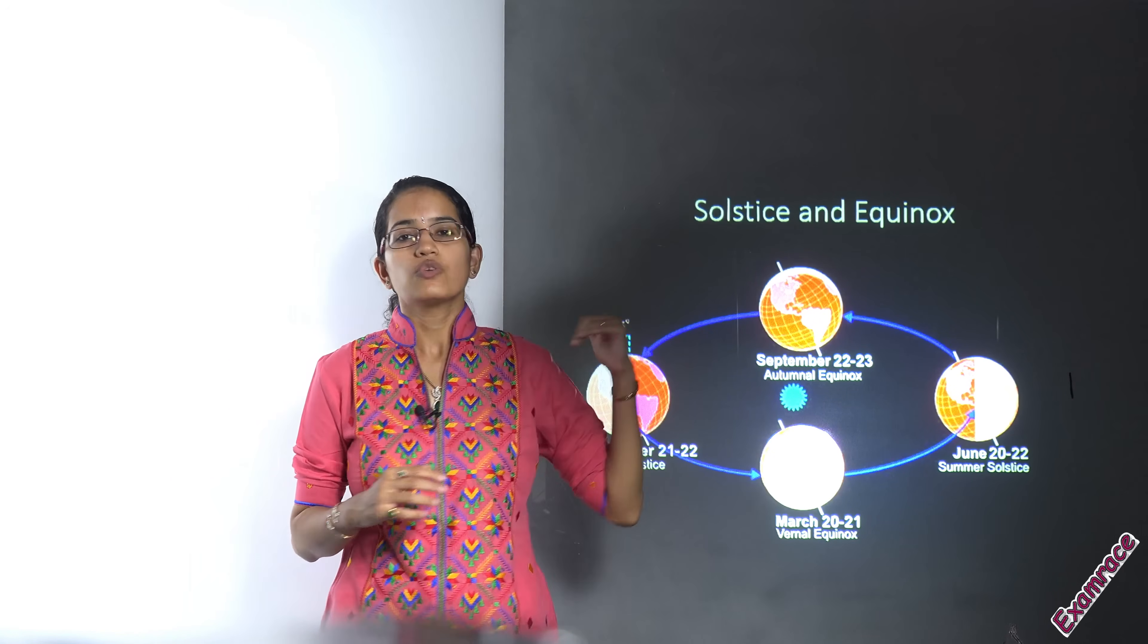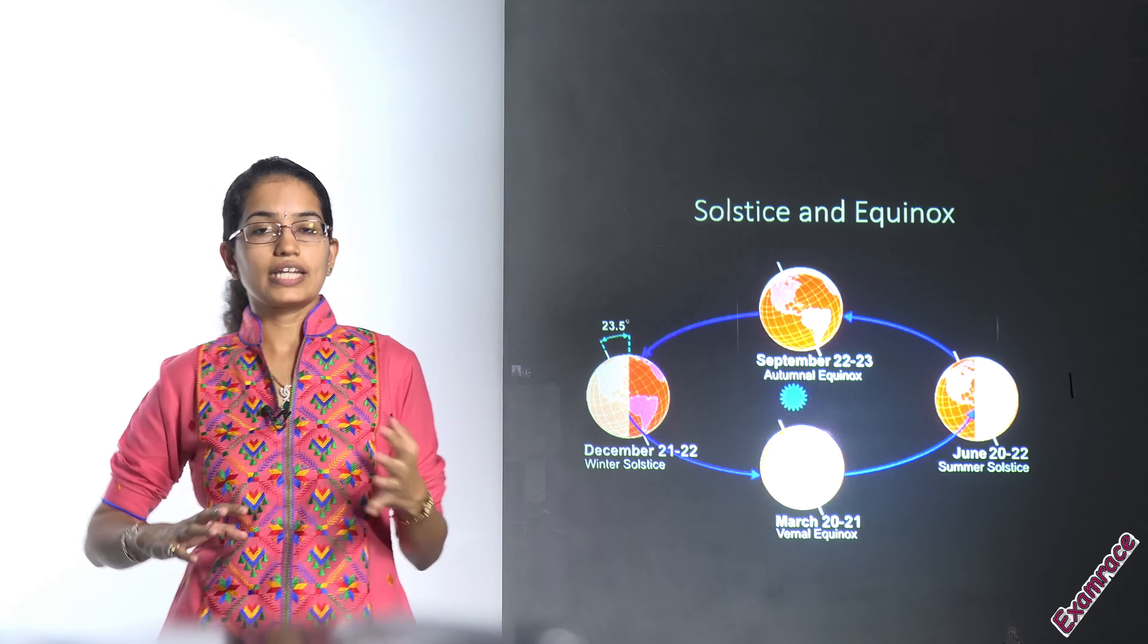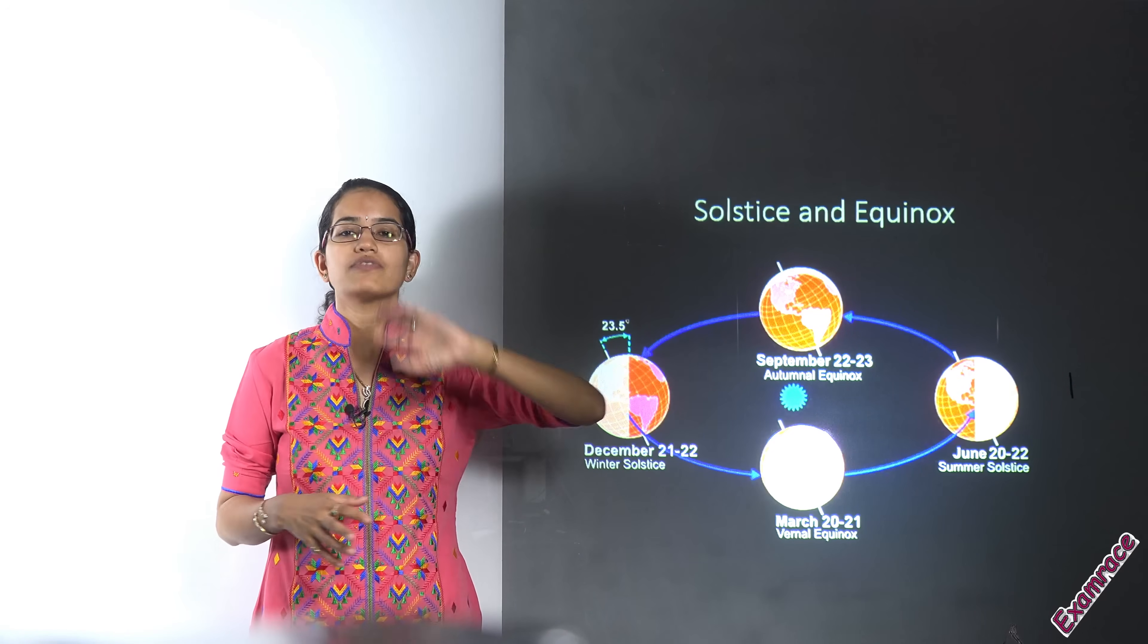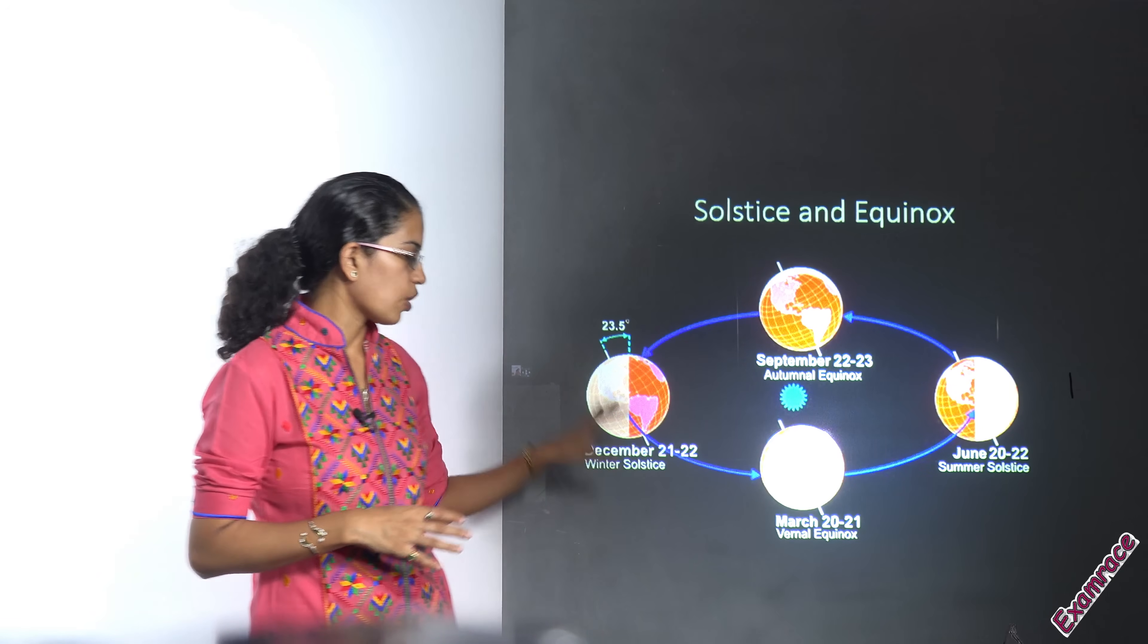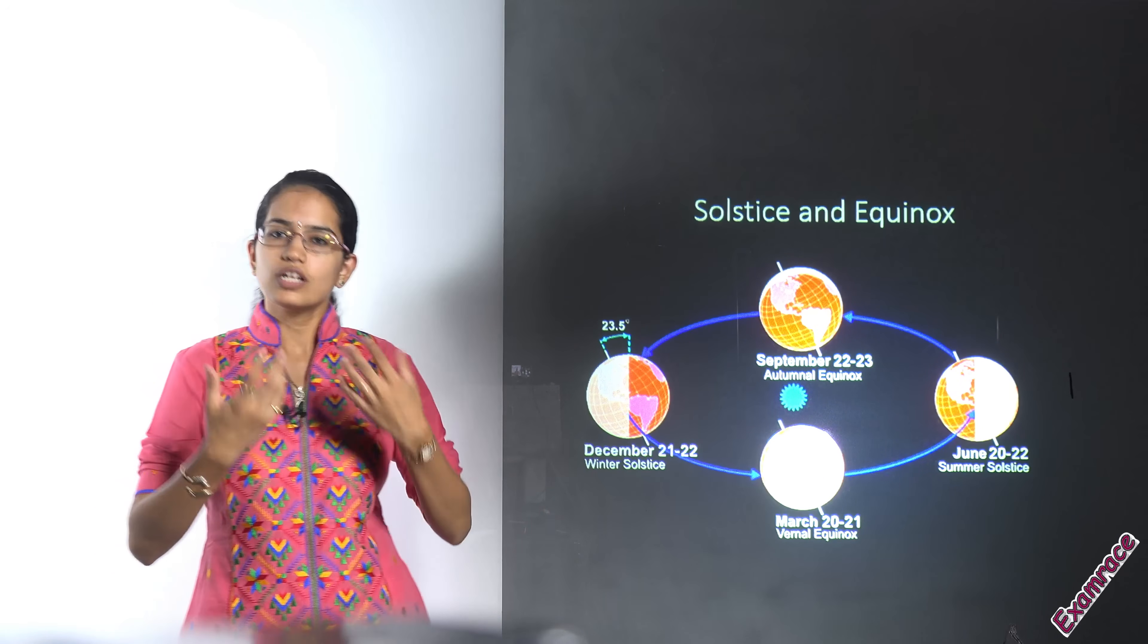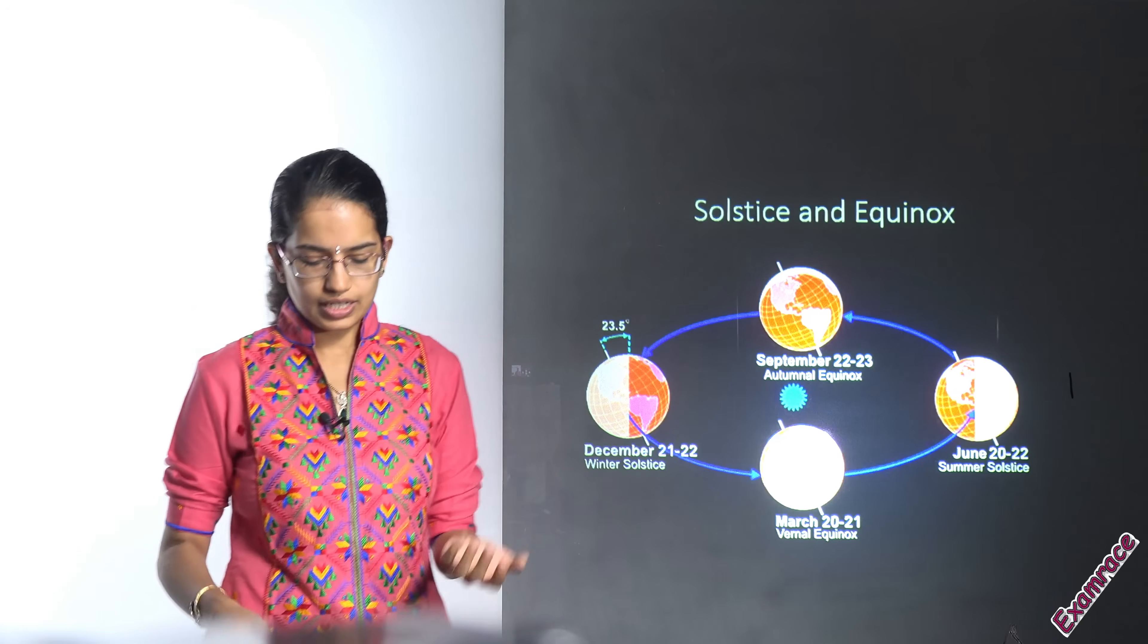However, at solstice you would have longest days and longest nights. So in the Northern Hemisphere summer solstice you have the longest days, and in the Northern Hemisphere in December you would have the longest nights, and vice versa occurs in the south.